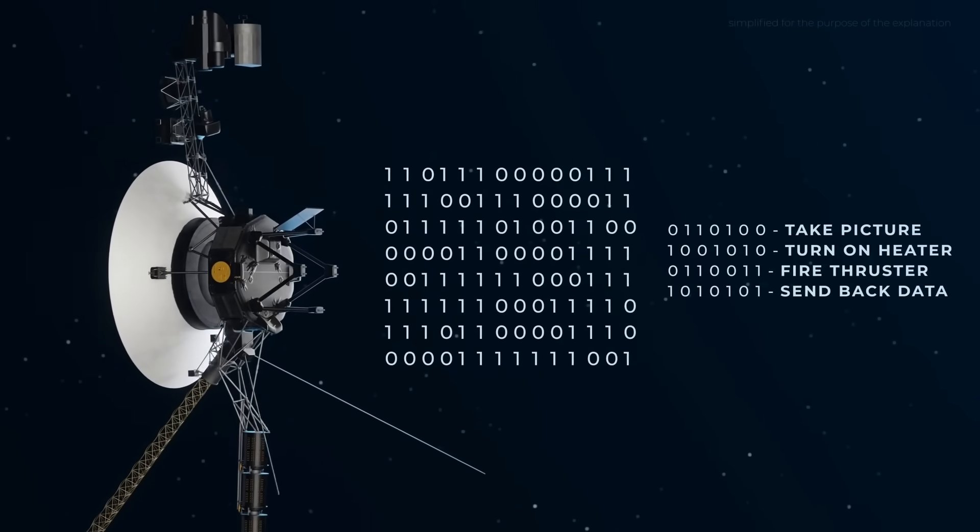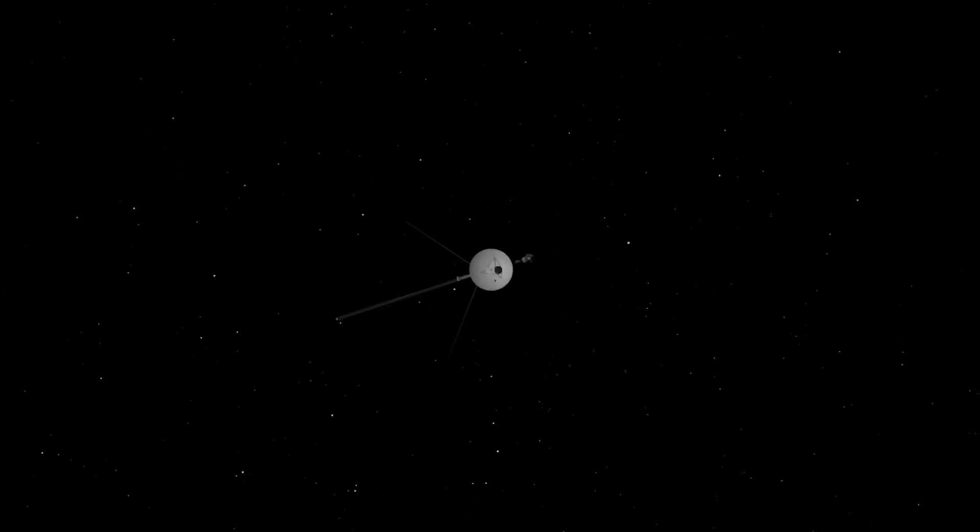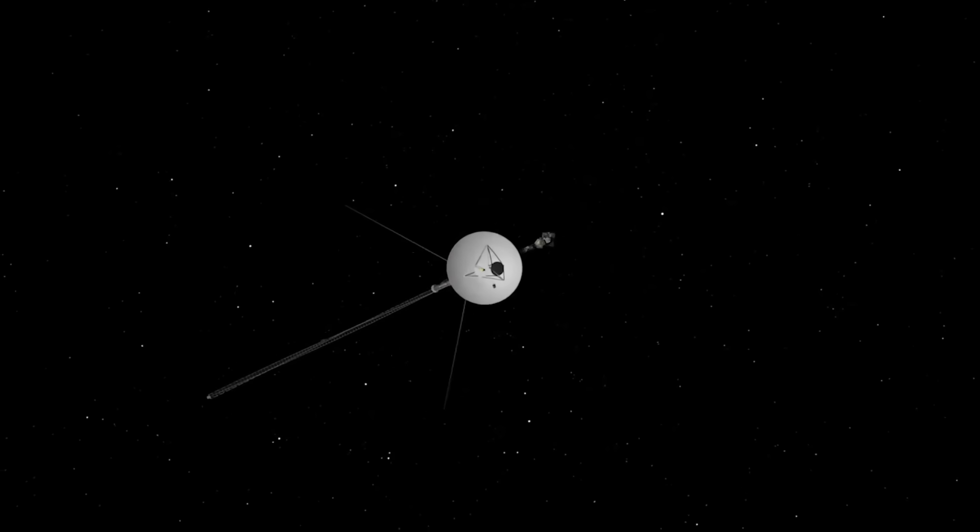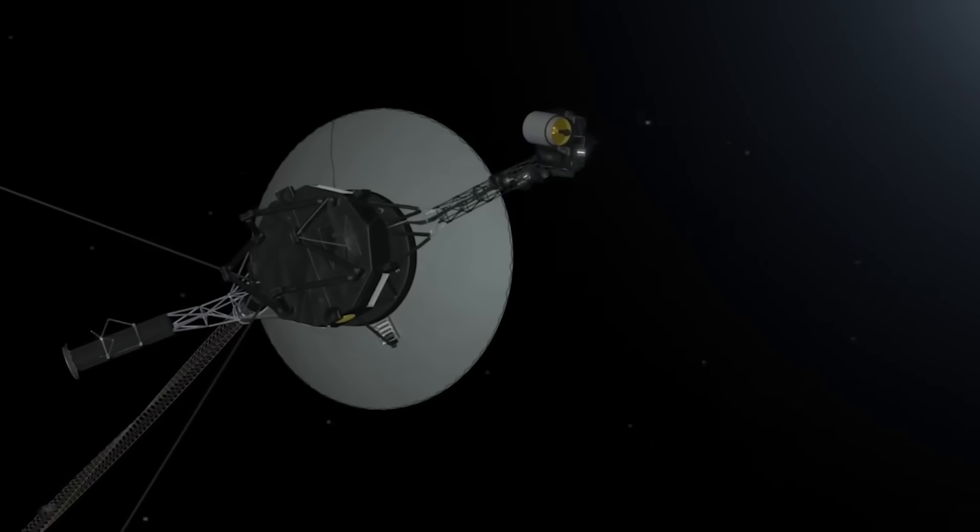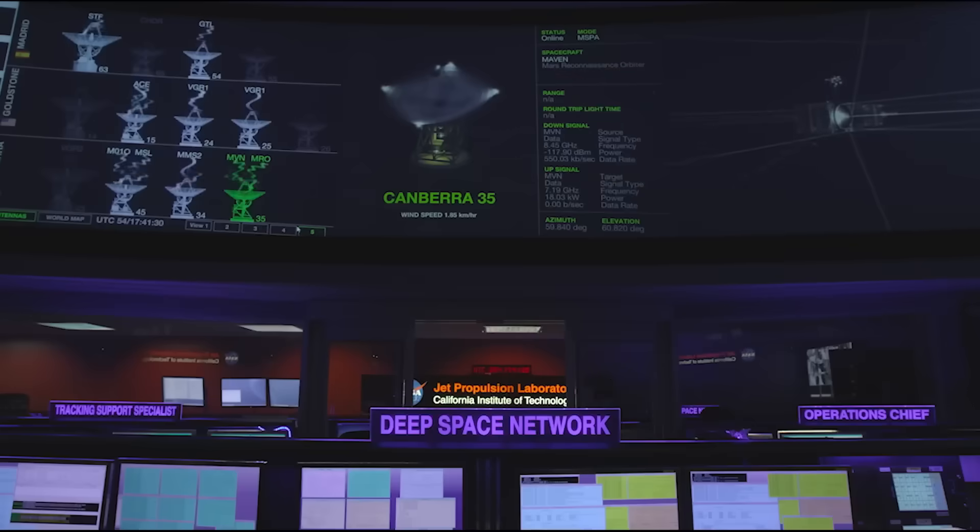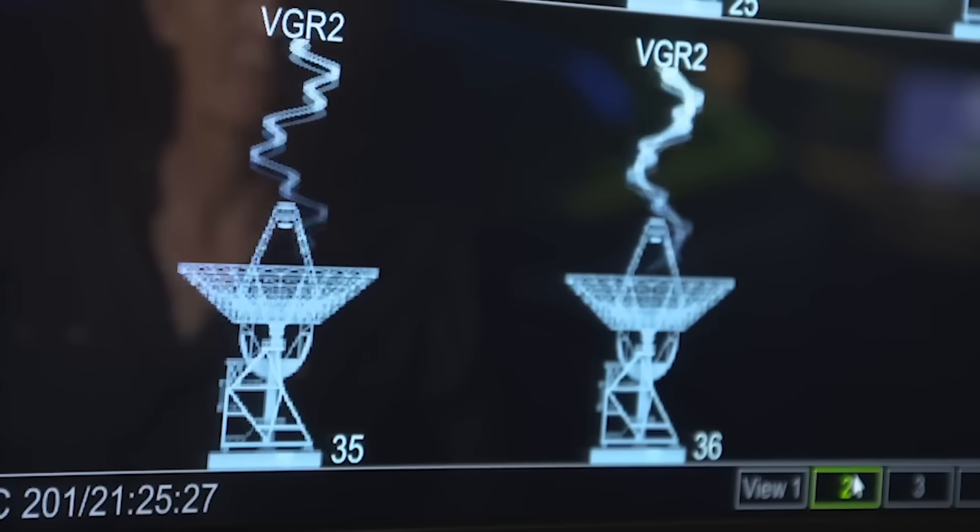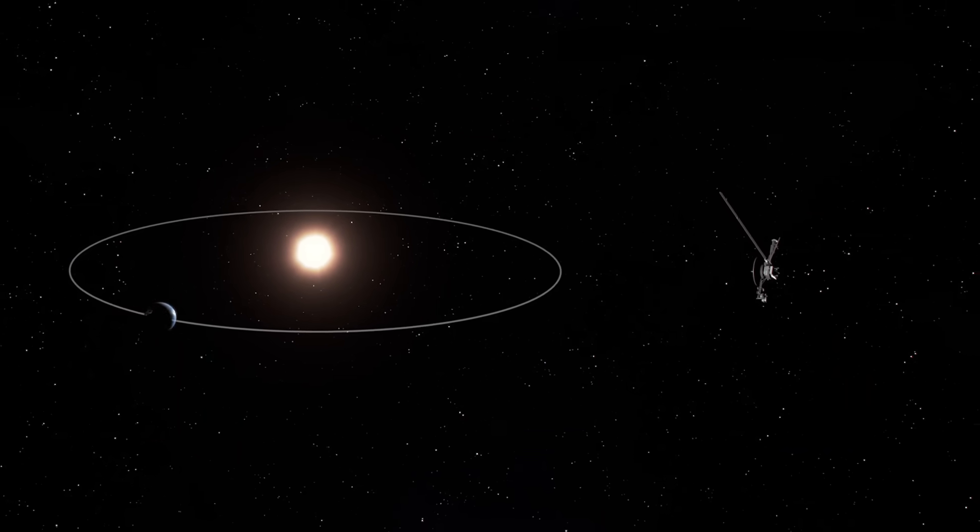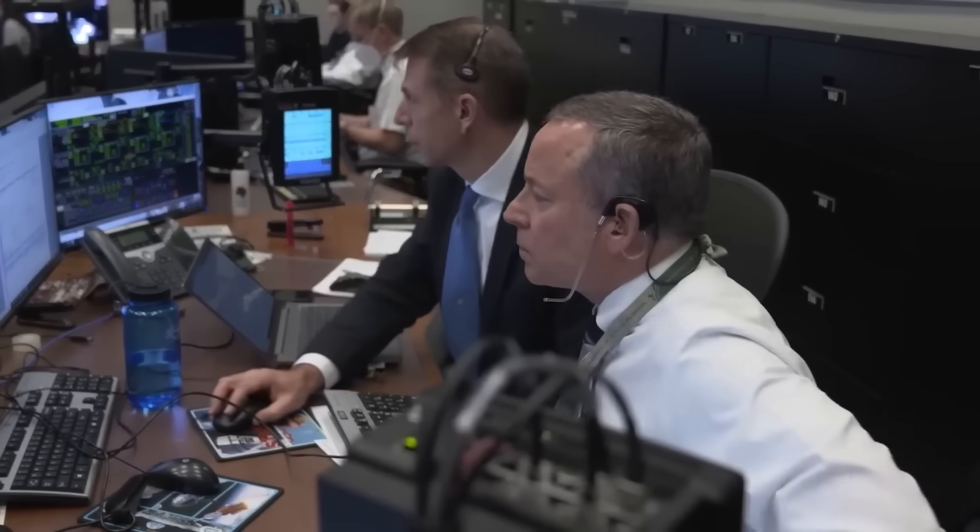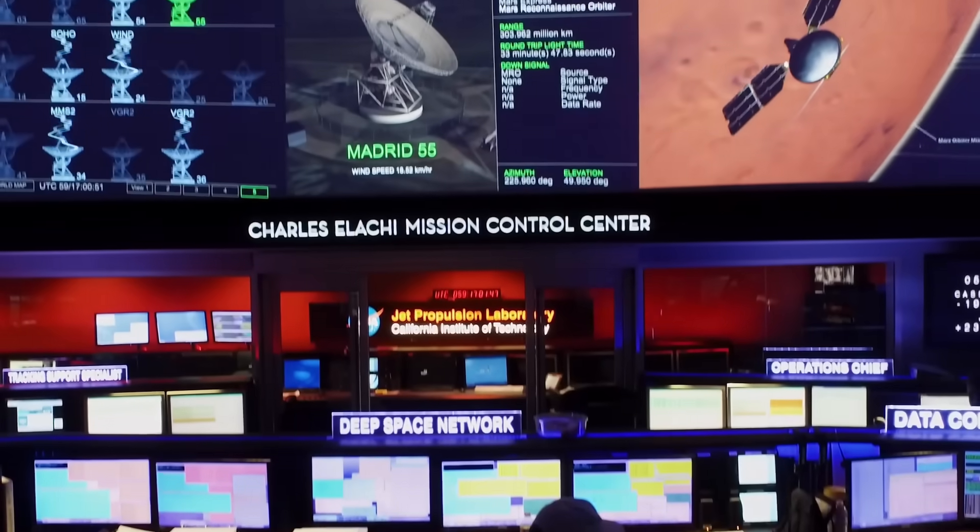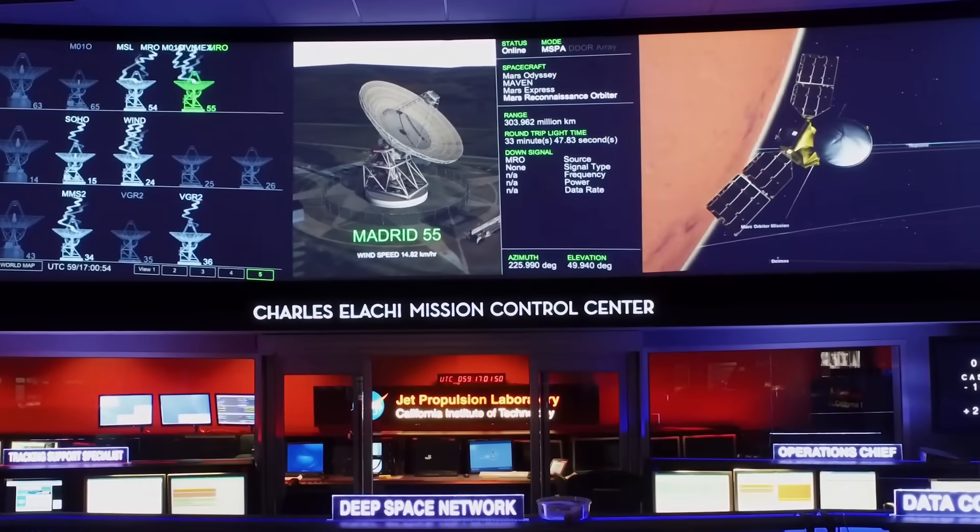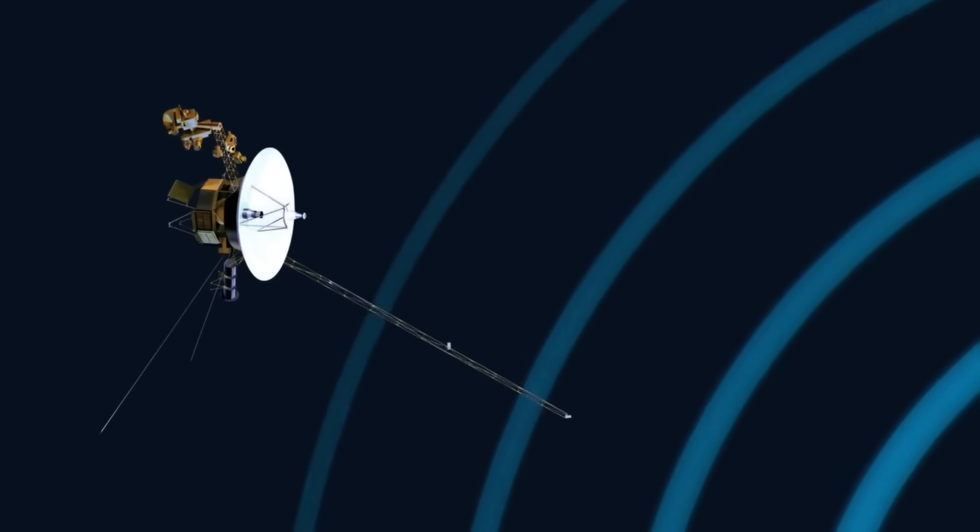No other functioning spacecraft has crossed the heliopause, and none will reach Voyager's current position for many years. When Voyager falls silent, humanity will lose its eyes and ears in interstellar space. Our furthest outpost will become a mute messenger, still carrying the golden record, but no longer able to tell us what it encounters. So the question becomes, are we listening closely enough? Are we treating this as just static from an old spacecraft, or as the last chance to hear something truly extraordinary?